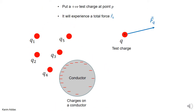So to measure the electric field at point P, what we do is bring a positive test charge. You bring this charge yourself — it has nothing to do with the charges already here. You bring a charge called the test charge, you know its value, and you place it at point P in space.